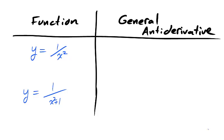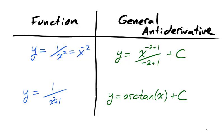Take for instance the function 1 over x squared and 1 over x squared plus 1. As 1 over x squared is x to the negative 2, and negative 2 is not negative 1, we know how to calculate the general antiderivative, we're just reversing the power rule.